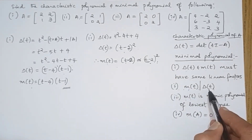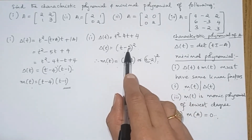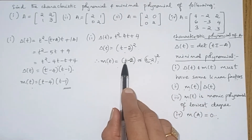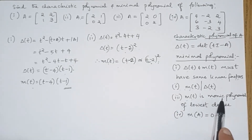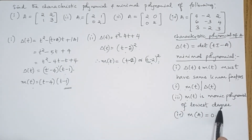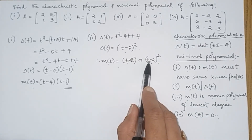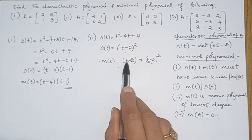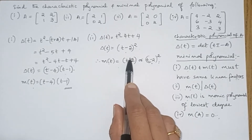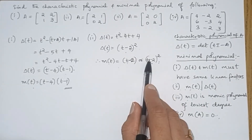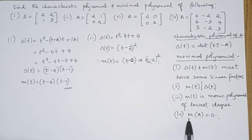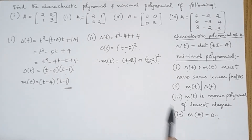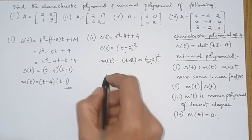Whenever there is more than one possibility, you have to check the other conditions. M(T) must divide delta(T) — both polynomials satisfy this. The third condition is M(T) is a monic polynomial of lowest degree; out of the two, (T minus 2) has degree 1 while (T minus 2)² has degree 2. But we cannot conclude yet — the last condition is M(A) must equal 0, so we must check for which polynomial A is a root.